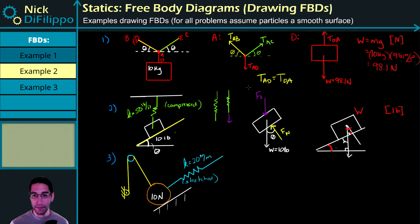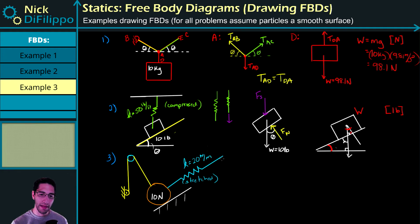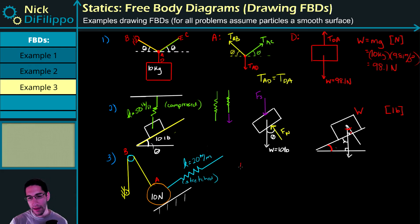So that right here is my free body diagram of the second example. Let's look at the third example. Here I have a ball that's in contact with a surface, a spring that is stretched, and a rope that goes over a pulley connected to a wall. Let's call the ball point A and the pulley point B. I want to draw a free body diagram of both A and B.